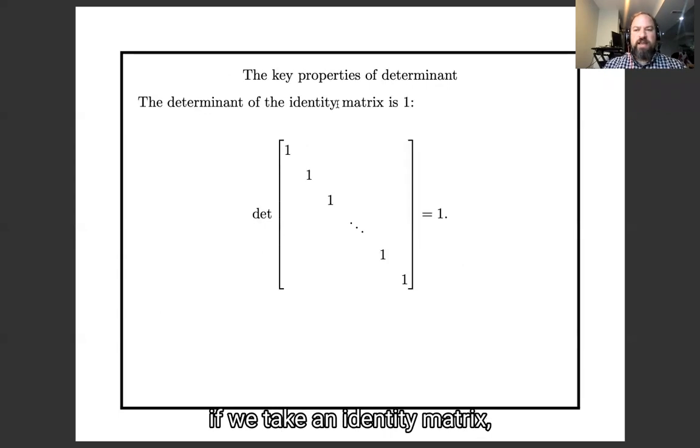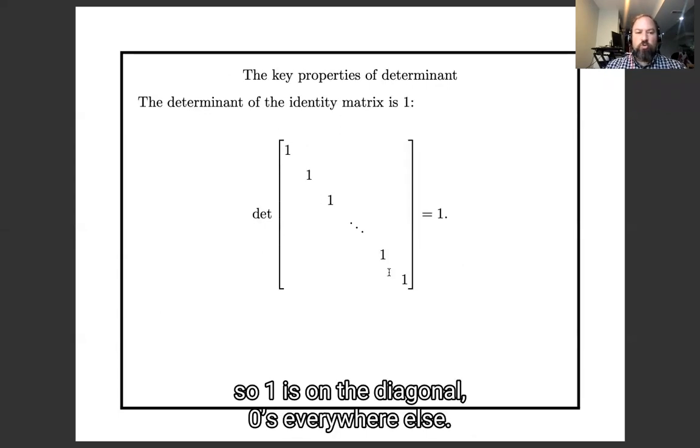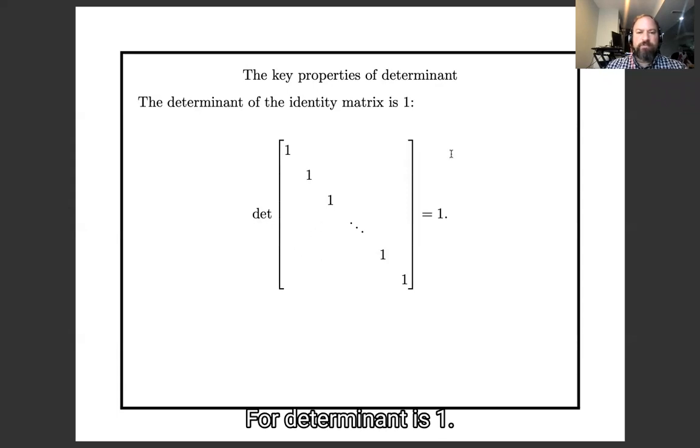Okay, so first property, if we take an identity matrix, so one's on a diagonal, zero's everywhere else, its determinant is one. I don't have much to say about that, but I want to get it out there.